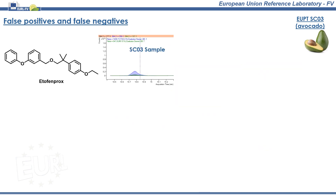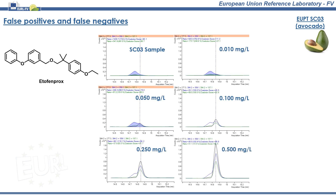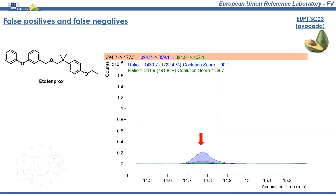The DigiSante document proposes a strategy to confirm if a signal corresponds to a pesticide or not. This strategy consists in adding increasing concentrations to the sample of the suspected pesticide, and observing the chromatographic behaviour. In this case, as can be observed from the chromatograms, this signal is not etofenprox, as the interference abundance is constant, whereas the peak corresponding to etofenprox rises with increased concentrations. Let's take a look at the previous slide again, but now zoomed in.